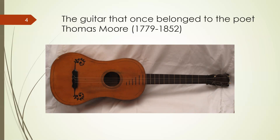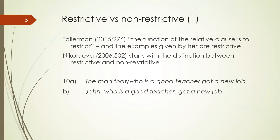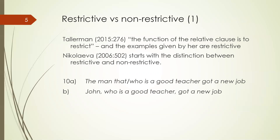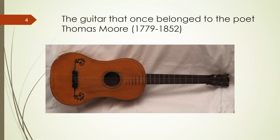The guitar that once belonged to the poet Thomas Moore, 1779 to 1852, now belongs to me. It was built around 1790 and is not in very good condition, but it is a very beautiful thing. The relative clause 'that once belonged to Thomas Moore' restricts the reference — it can no longer refer to just any guitar; it can only refer to this one.